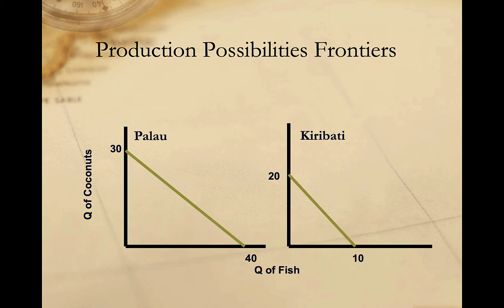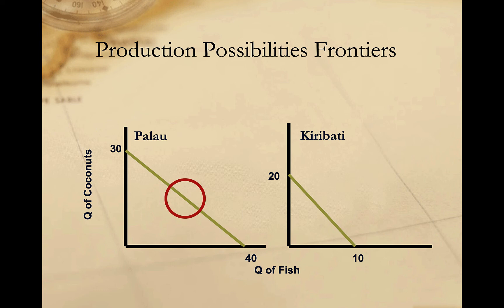It's possible to graph the production combinations for each country. This graph is called the production possibilities frontier, or PPF. Palau's PPF shows they could produce 30 coconuts and no fish, 40 fish and no coconuts, or anything in between. Kiribati's PPF shows they could produce 20 coconuts and no fish, 10 fish and no coconuts, or something in between. These graphs show the same information from the tables, just in a slightly different format.